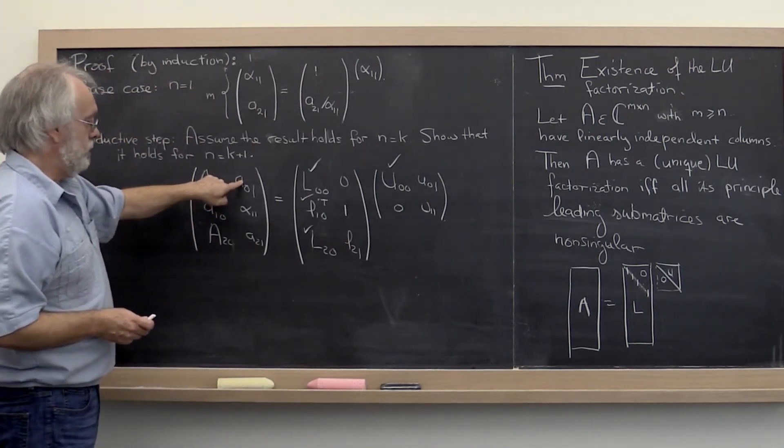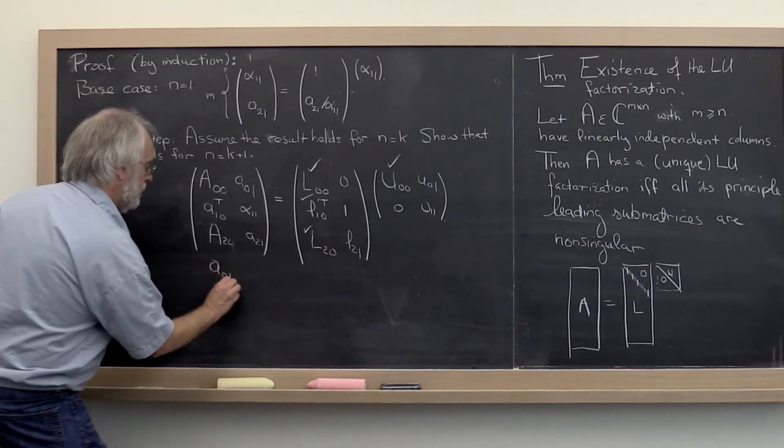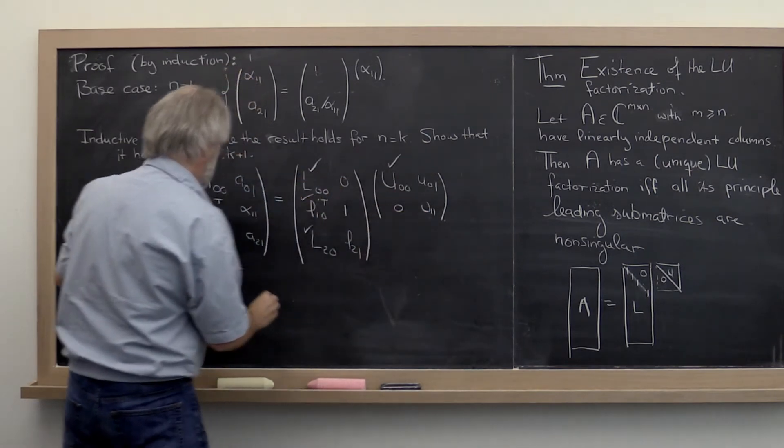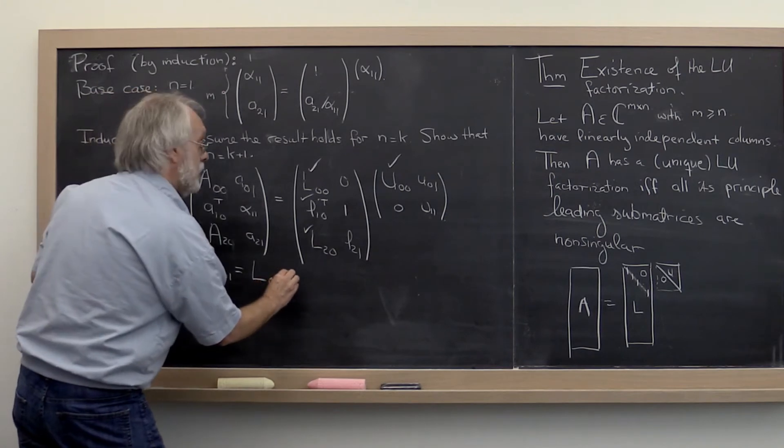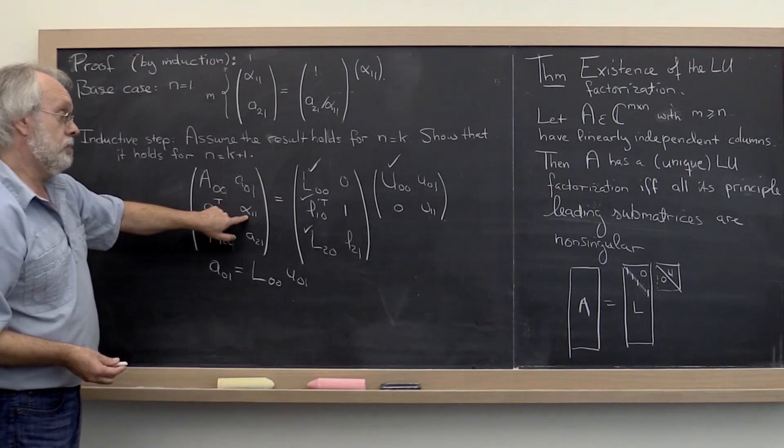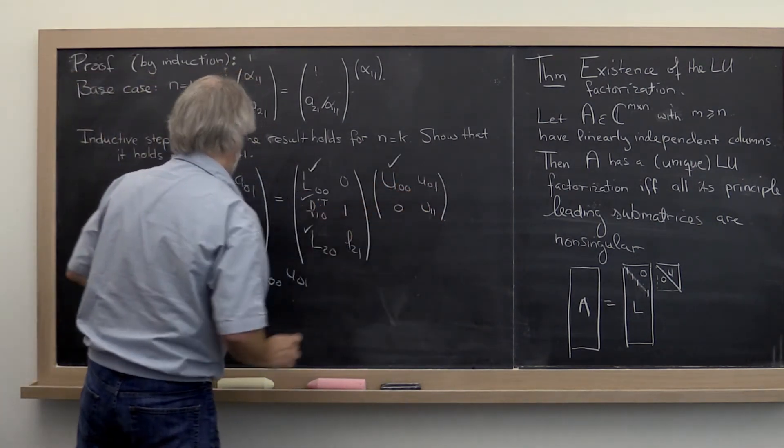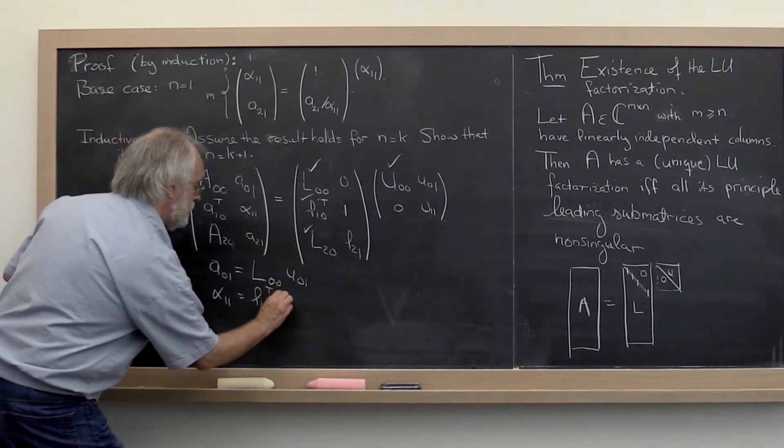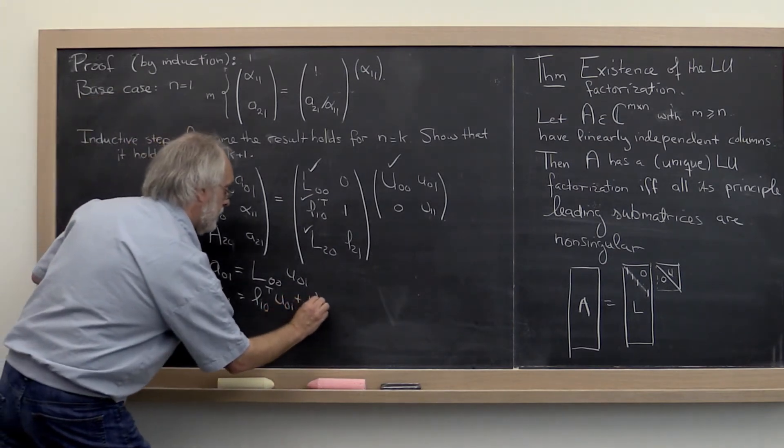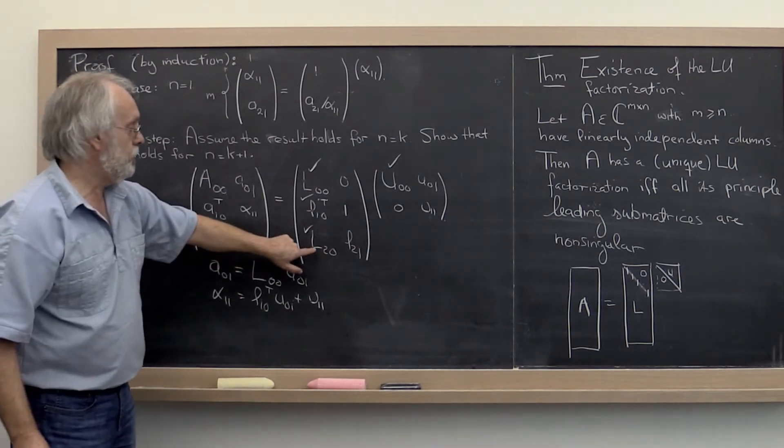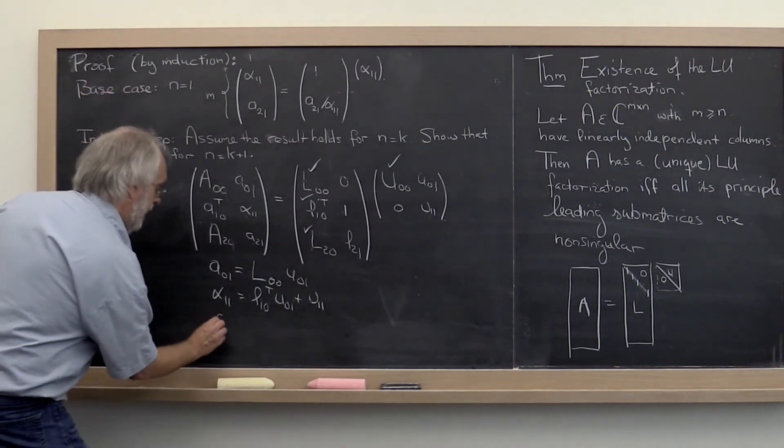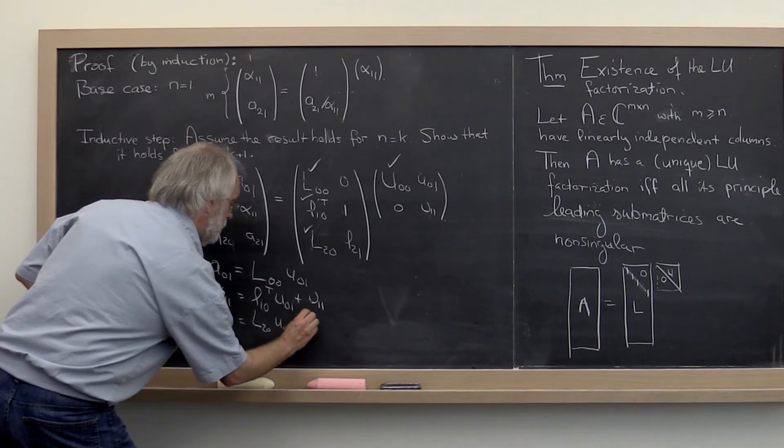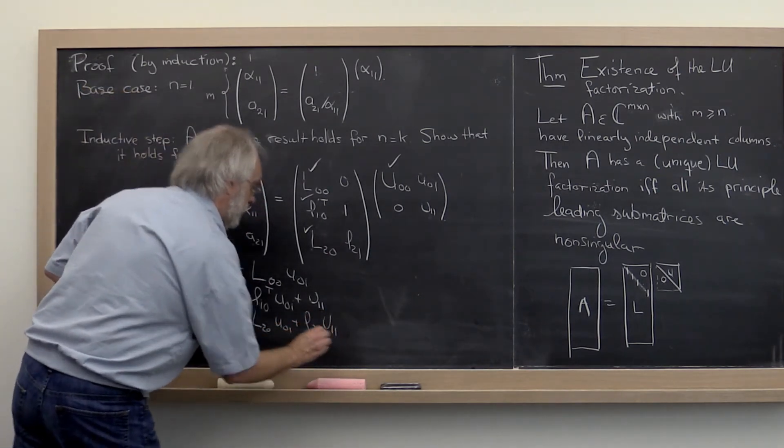Now this right here, A01 must be equal to this times that plus this times that. So it must be equal to L00 times U01. Alpha11 must be equal to this times this plus this times that. So we get that A21 is equal to L20 times U01 plus epsilon11. And finally, A21 must be equal to this times that plus this times that. So we get that A21 is equal to L20 times U01 plus L21 times U11.